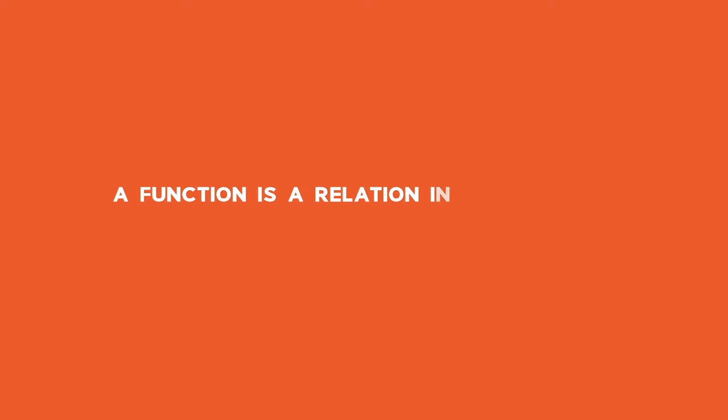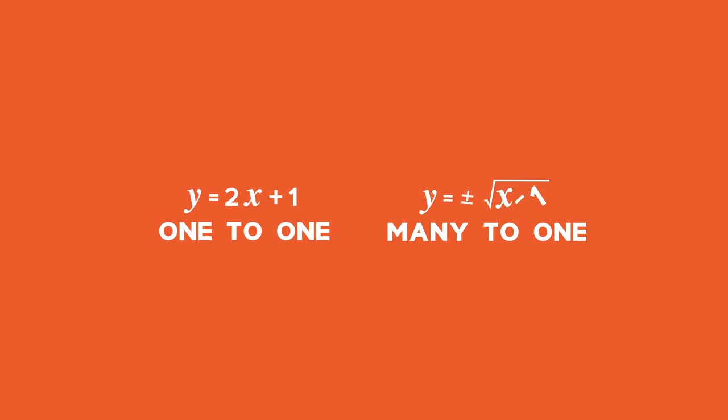A function is a relation in which every input has a unique output, which means only one output. The only mappings that are functions are one-to-one and many-to-one.